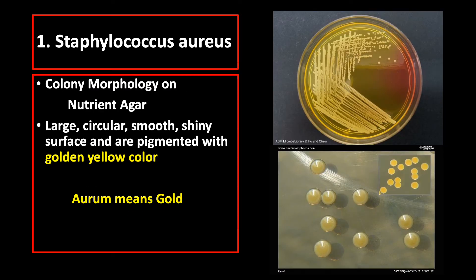The colony of Staphylococcus aureus on agar is large, circular, smooth, shiny surface, and golden yellow in color. It is named Staphylococcus aureus — aureus from the Latin word aurum, which means gold.